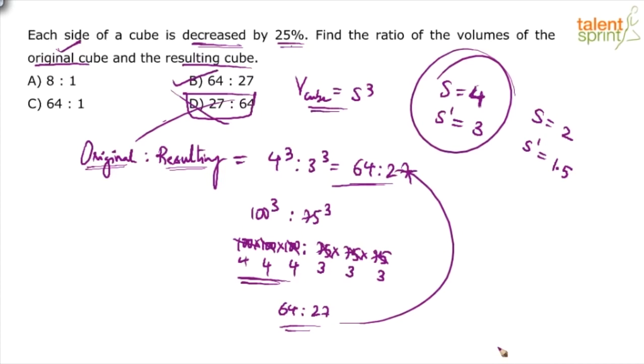So solve it using 100 or 4 or 3, ultimately you have to reduce the side by 25 percent to get the new side and take the ratio of the volumes. 64 is to 27. 100³ is to 75³, so 4×3×4×3×4×3. Option B is the answer.